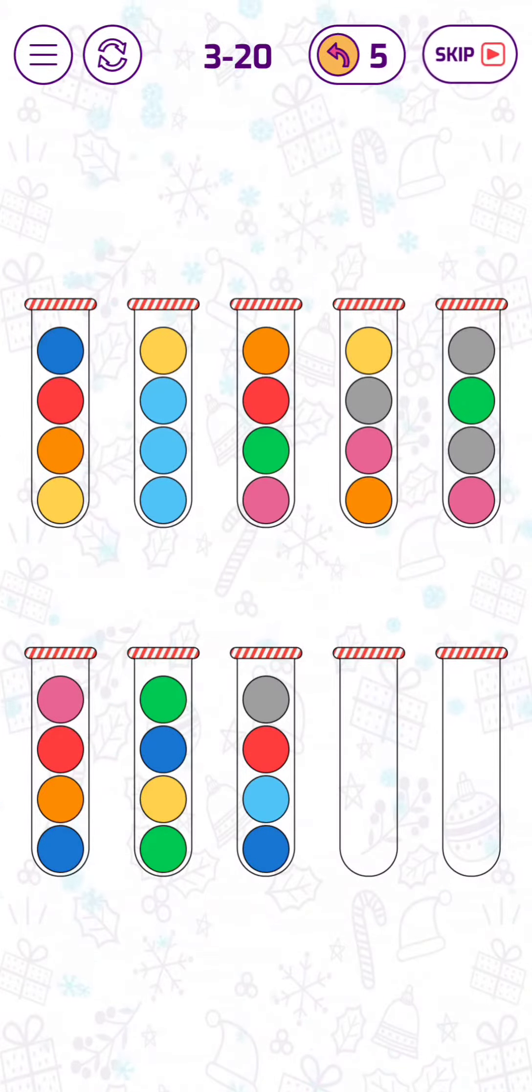Let's find a solution for level 20 in the hero mode of bubble sort puzzle game. Let's start right away by putting those two grey bubbles down here. And then we can put this yellow bubble here so that we can get this grey bubble out.